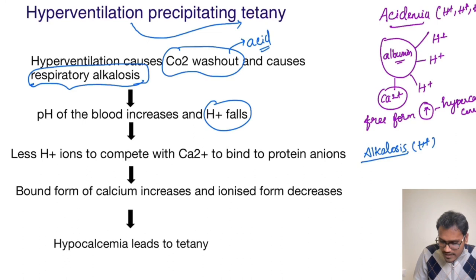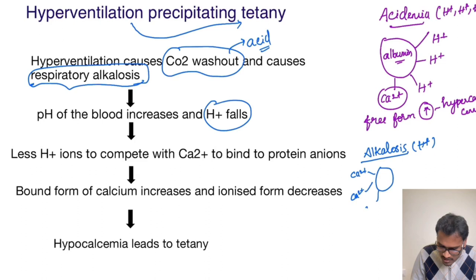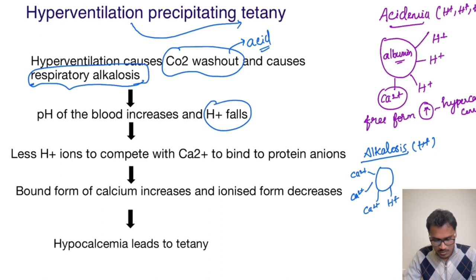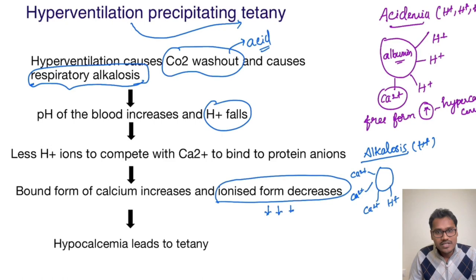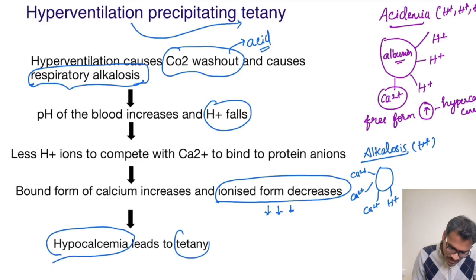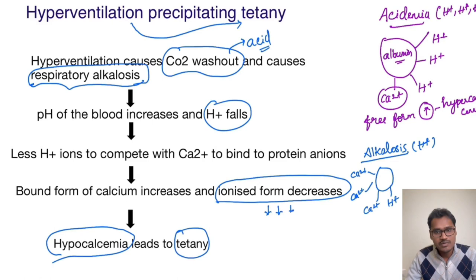In alkalosis, the availability of H+ is very low, so instead of H+, more and more calcium binds to albumin or plasma proteins. Only less H+ is bound to plasma protein. This leads to the free or ionized form of calcium decreasing significantly — a condition called hypocalcemia. As seen in the previous 'Explain Why' series, hypocalcemia increases the excitability of tissue, causing tetany. So hyperventilation indirectly reduces free calcium levels, leading to precipitation of tetany.